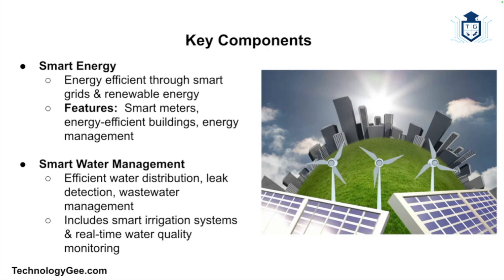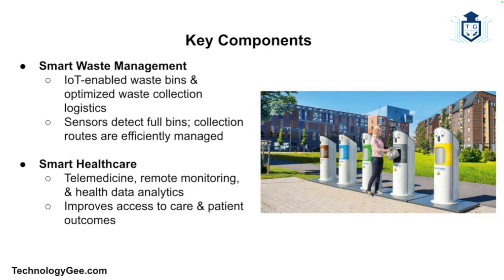Smart meters and energy management systems help optimize energy usage. Smart water management implements technologies for efficient water distribution, leak detection, and wastewater management — smart irrigation systems and real-time water quality monitoring enhance water resource management. Smart waste management uses IoT-enabled waste bins and smart logistics to optimize waste collection and recycling processes, where sensors can detect when bins are full and route collection vehicles efficiently.